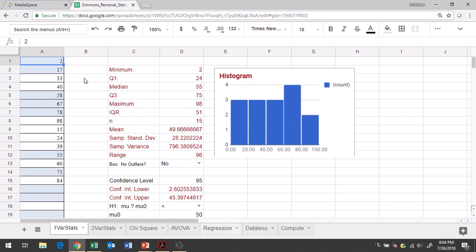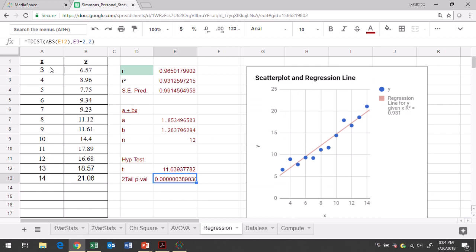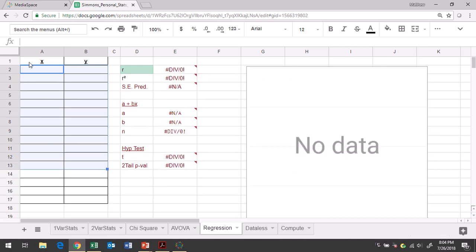So in the regression tab, clear out any data that's already there, and then in cell A2, start typing your x values.